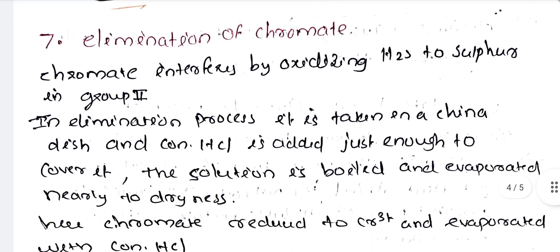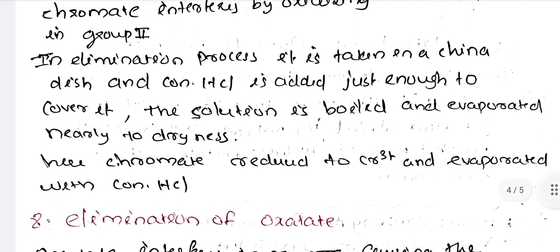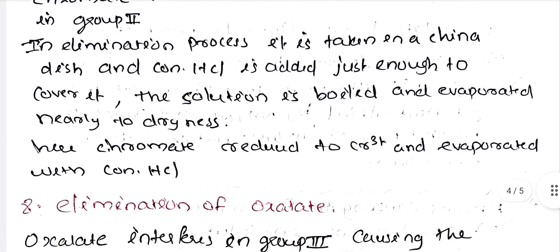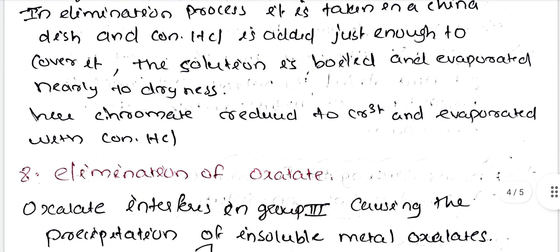Elimination of chromate. Chromate interferes by oxidizing H2S to sulfur in group 2. In the elimination process, the sample is taken in a china dish and concentrated HCl is added just enough to cover it. The solution is boiled and evaporated nearly to dryness. Here, chromate is reduced to Cr3+ and evaporated with concentrated HCl.